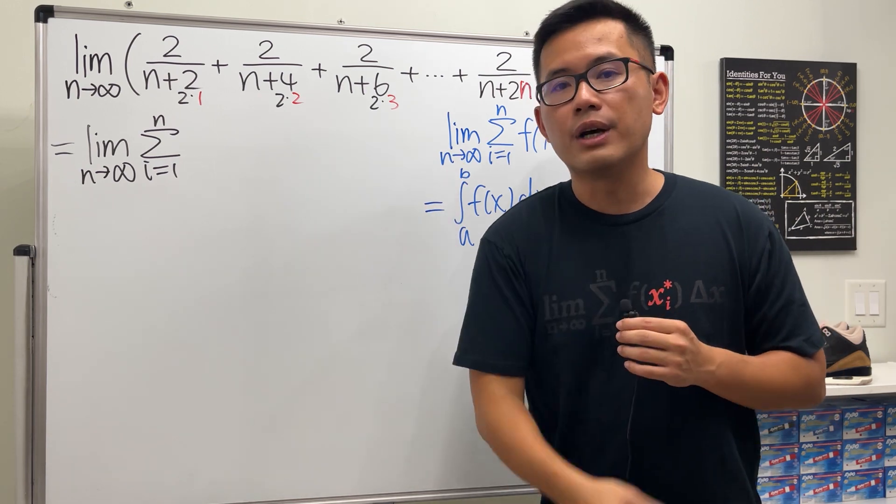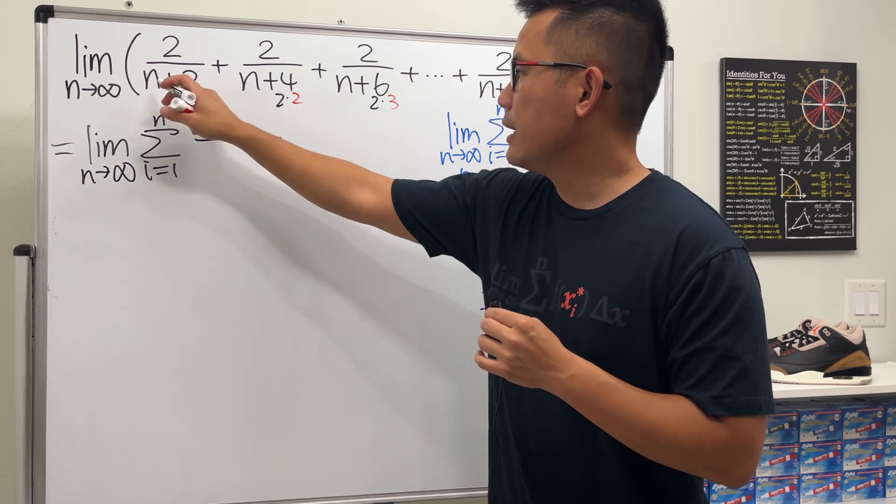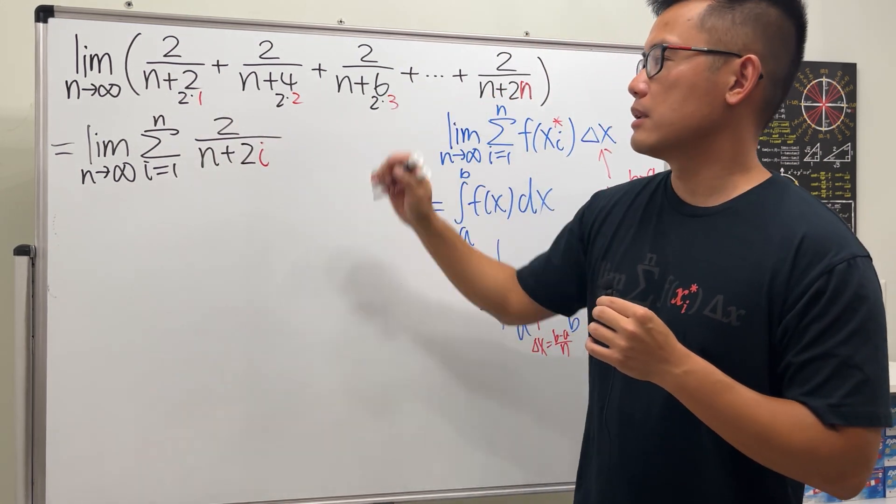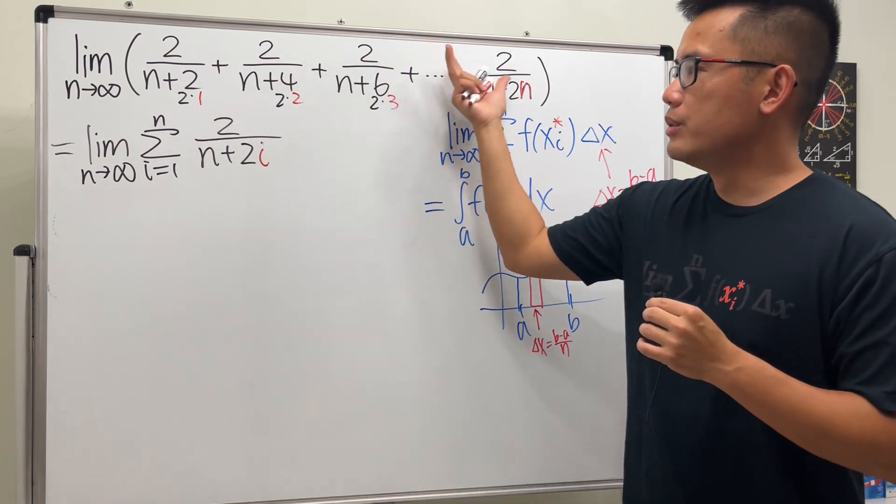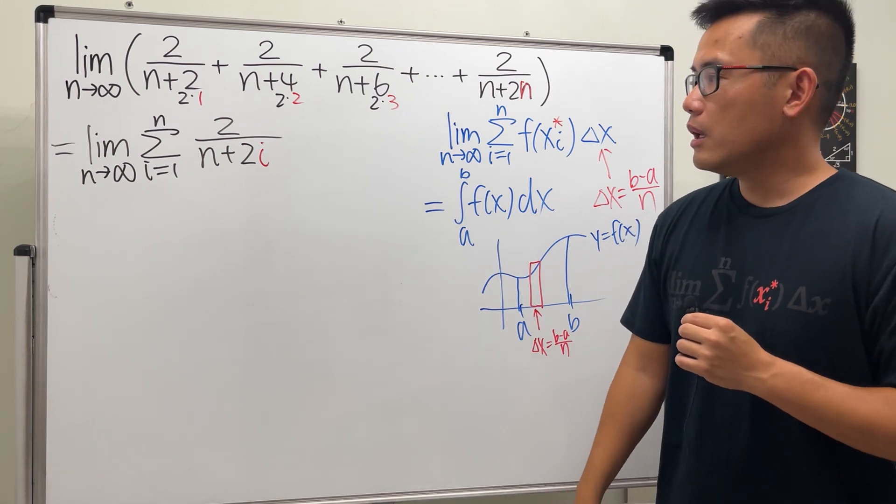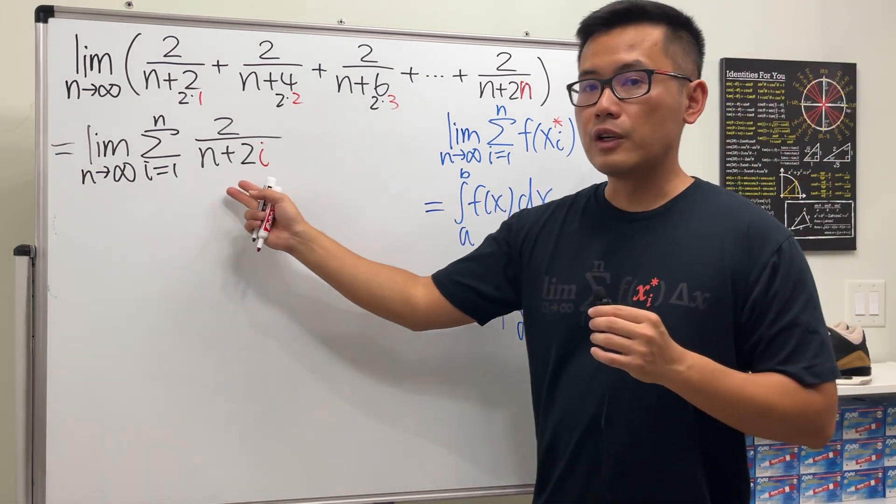And the reason that we are doing so is because i goes from 1 to n, meaning i is equal to 1, 2, 3, 4, 5, up to n. So we can rewrite this as 2 over n plus 2i. That's just a small change. That's how we can put this into the sigma notation. It's the limit all the way at the front, of course.